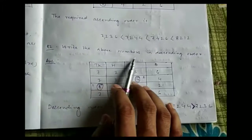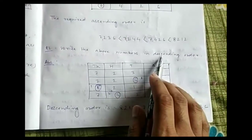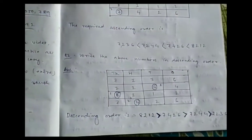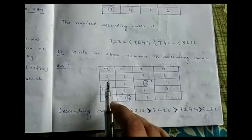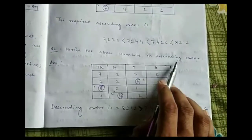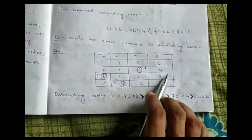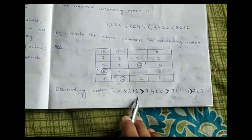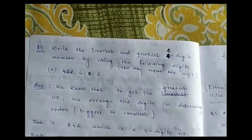If the question asks to write the numbers in descending order — biggest to smallest — the process is the same, but we search for the biggest digit in the same place first. The biggest digit in that place is our biggest number. We write it first and continue the same process to get the full descending order.